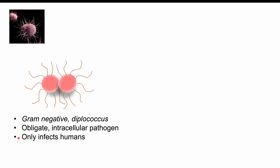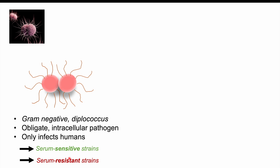This bacteria only infects humans in nature, and there are multiple strains of Neisseria gonorrhea. These include serum-sensitive and serum-resistant strains, referring to the strain's ability to evade the complement cascade. Serum-sensitive strains are susceptible to the complement cascade, so the host immune system can deal with them better, while serum-resistant strains can evade this mechanism and are more resistant to the host immune system.